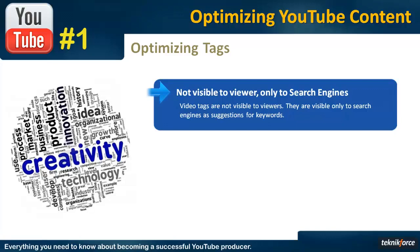If you're targeting a certain tag, the search engine will understand that you want to be ranked for that tag. And based on your video stats or on other factors, the search engine or YouTube will rank your video and you will be able to reach out to more people.